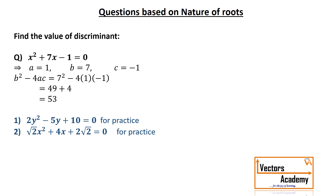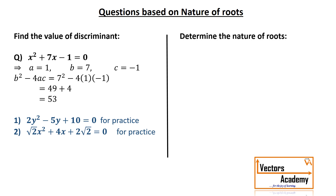You can try out those two practice questions on your own. The second type of question asks about the nature of roots. In these questions, we first find the value of the discriminant and then use the table to identify the nature of the roots.